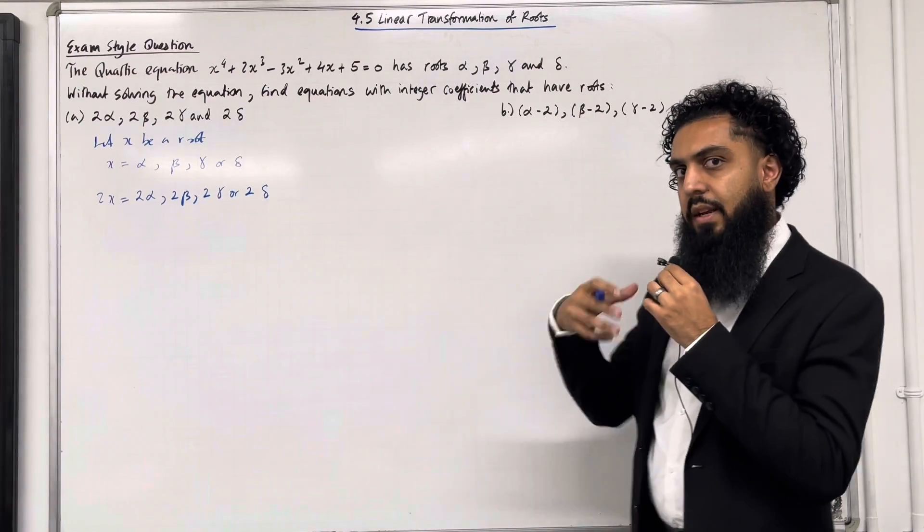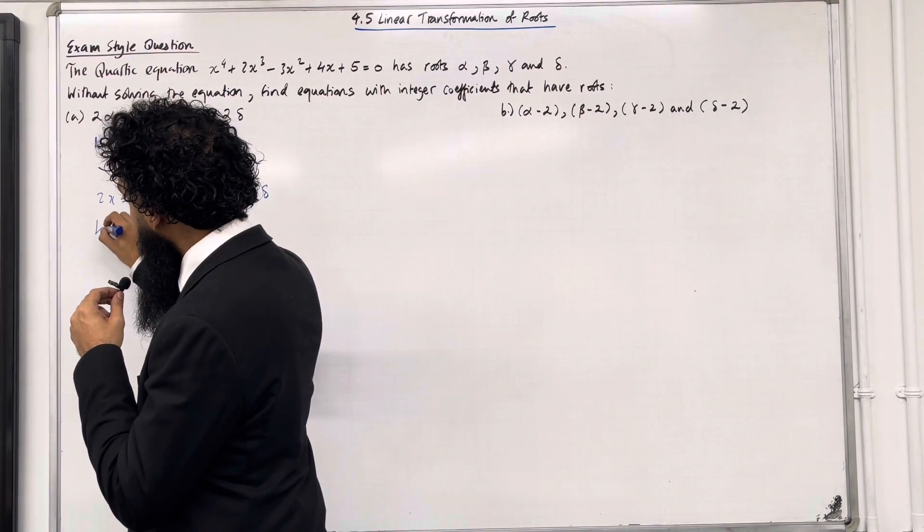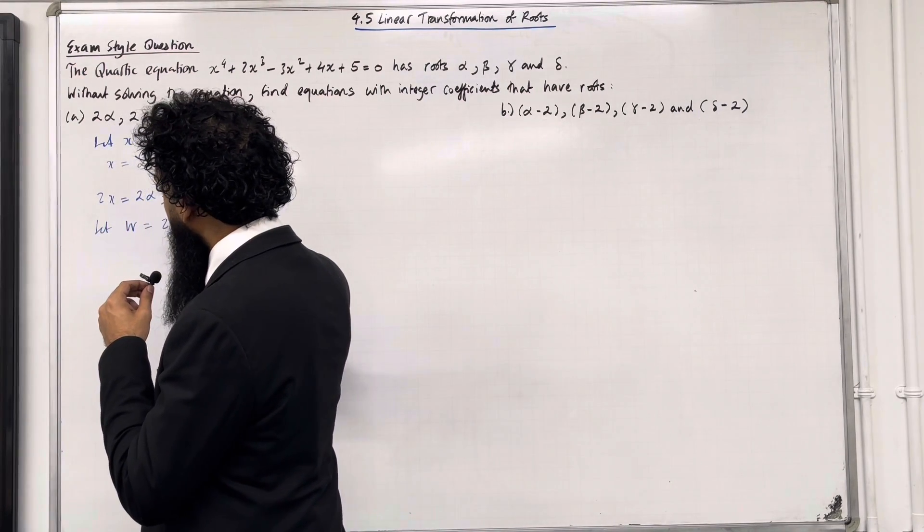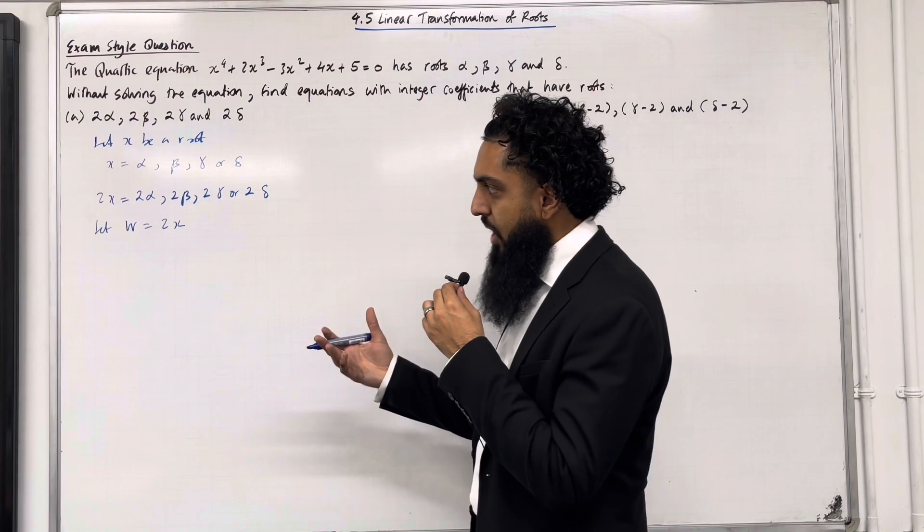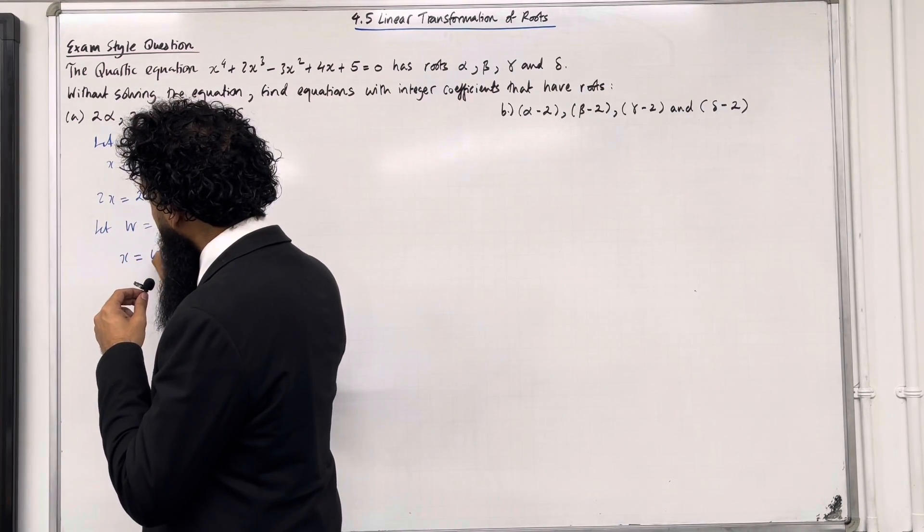Now I'm going to select a new variable. I'm going to say let w equal 2x. I can make x the subject and so if I do this I get x equal w over 2.